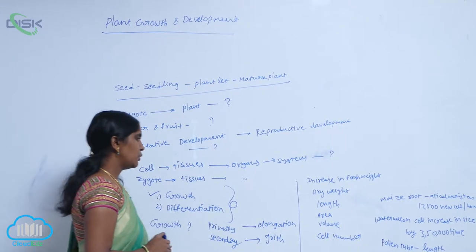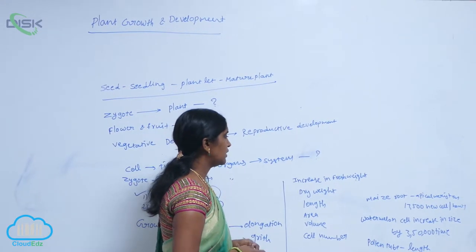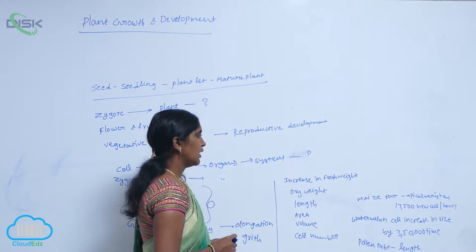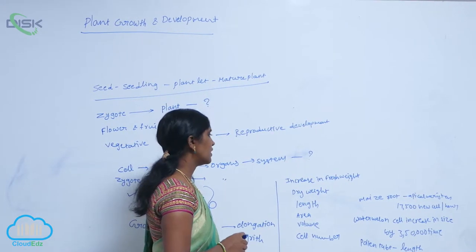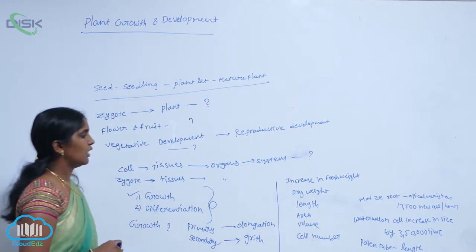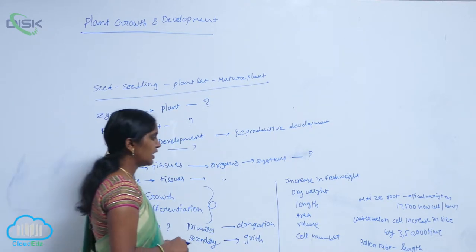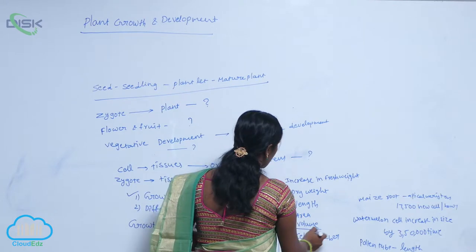Growth is measurable by various parameters. They are increase in fresh weight, dry weight, lengthwise, area, value and cell number.